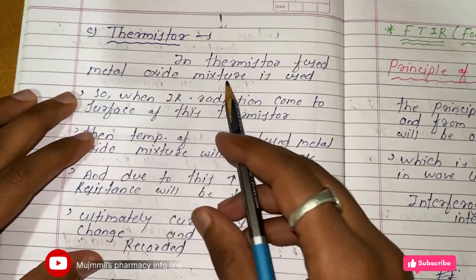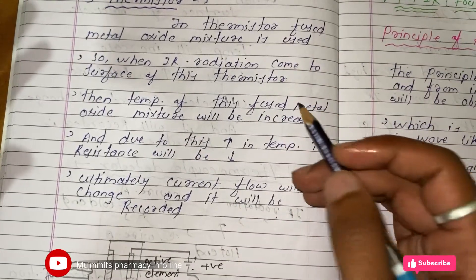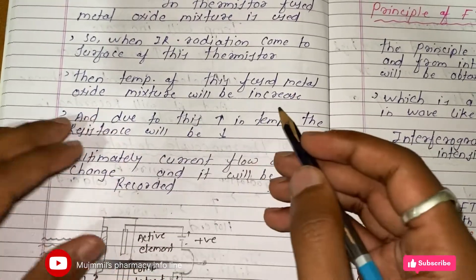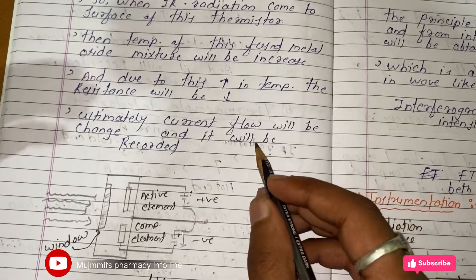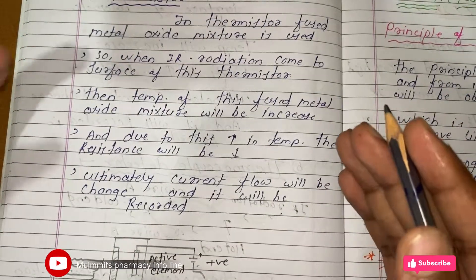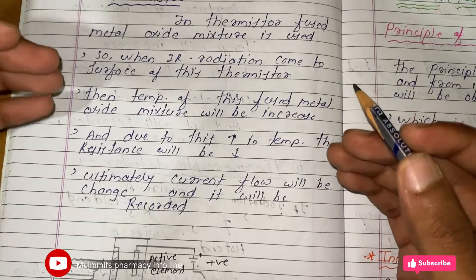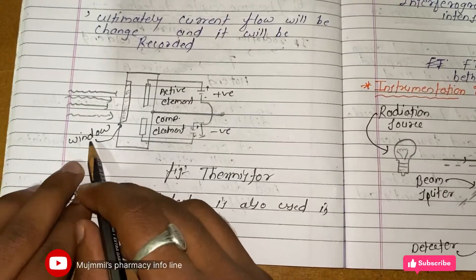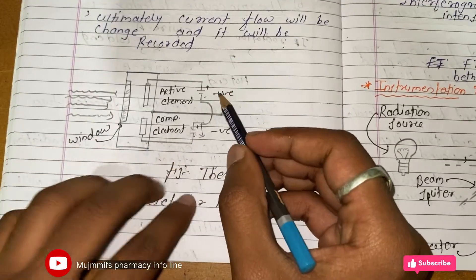The third detector is the thermistor. A fused metal oxide mixture is used. When IR radiation hits the surface of the thermistor, temperature increases, and due to this increase in temperature the resistance decreases, ultimately changing the current flow, which is recorded. The thermistor has a window for IR radiation, an active element, a compound element, and a current supply connection.